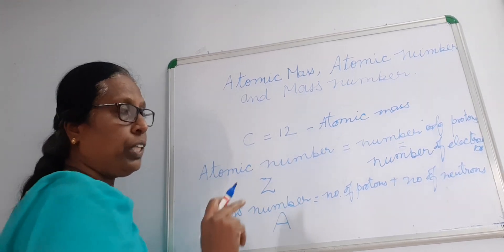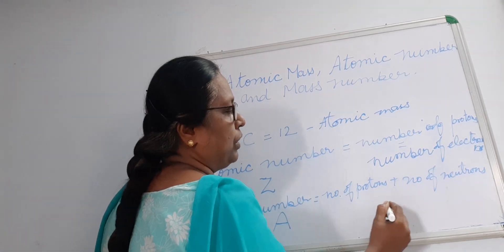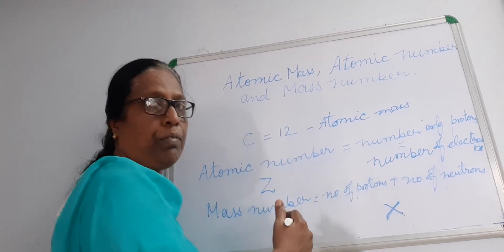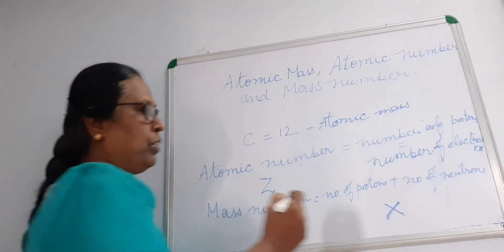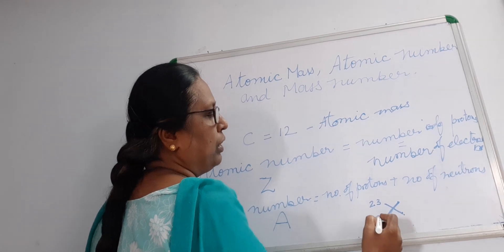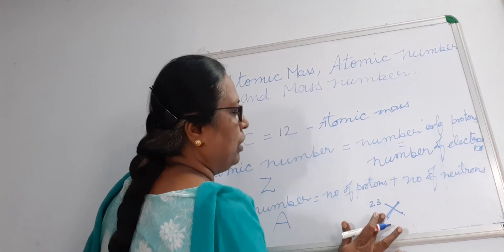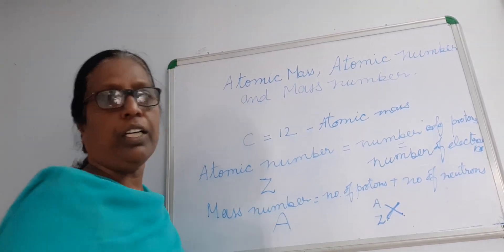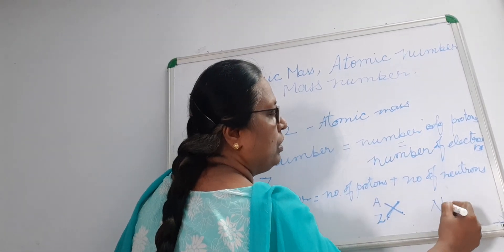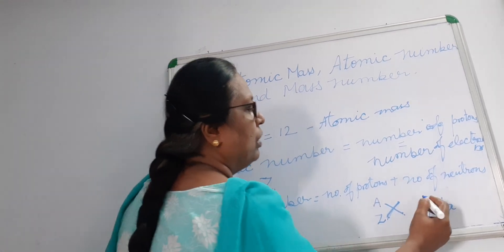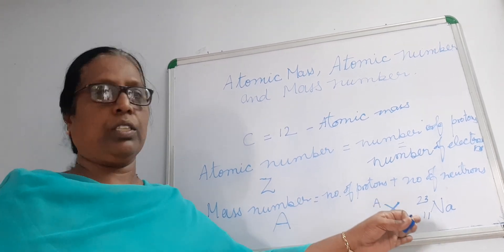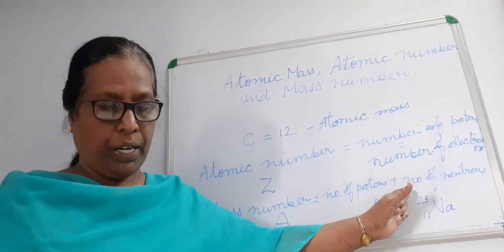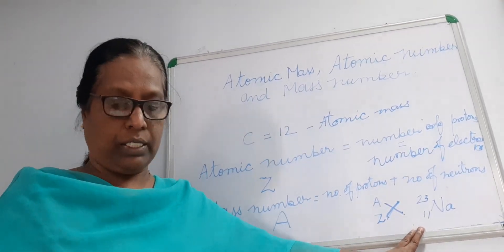If you take any element, for example element X, on the left side upper part we always write the mass number A, and on the lower part we write the atomic number Z. For sodium with symbol Na, the atomic number is 11 and mass number is 23. So for each element, its atomic number and mass number are written on the left side — upper part represents mass number, lower part represents atomic number.